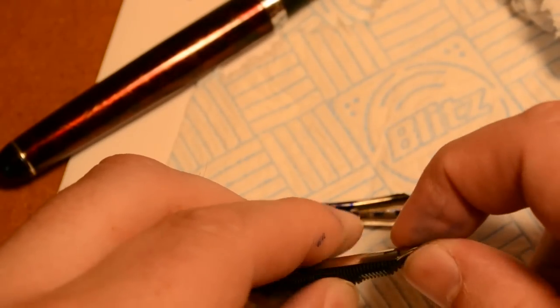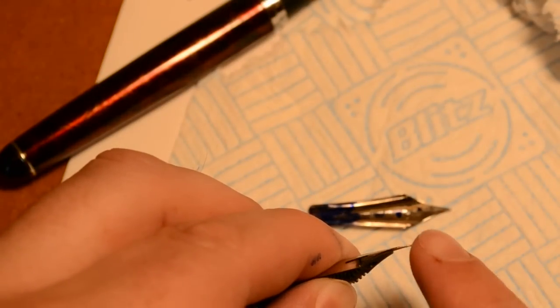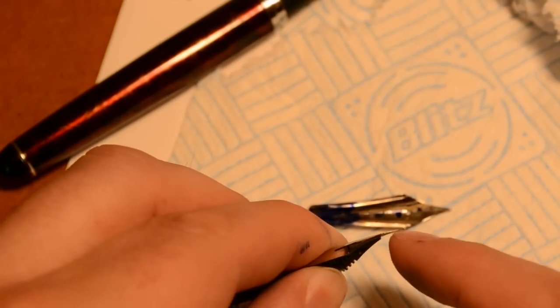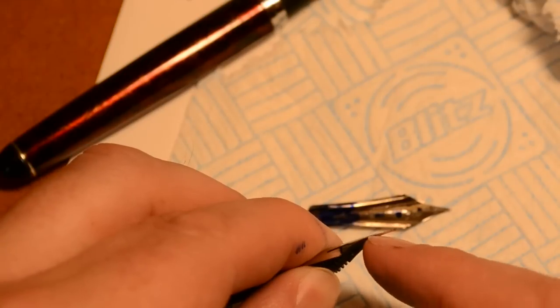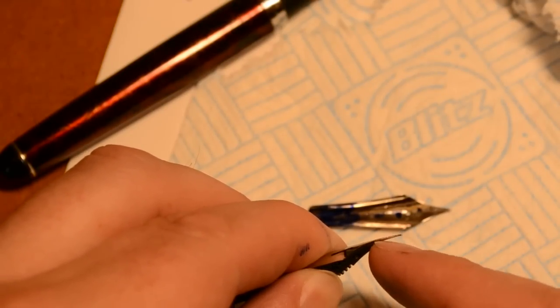Here, where the plastic feed meets the nib there should be no space. Literally you should not be able to slide a piece of paper in there.